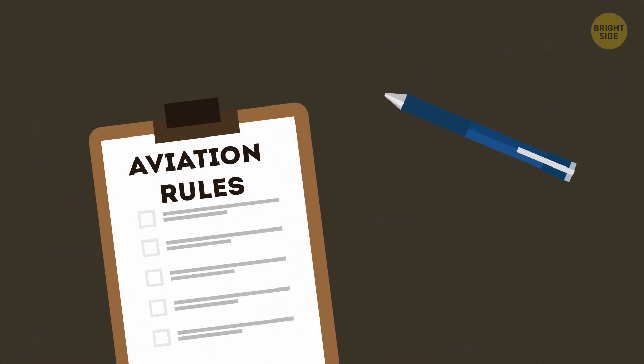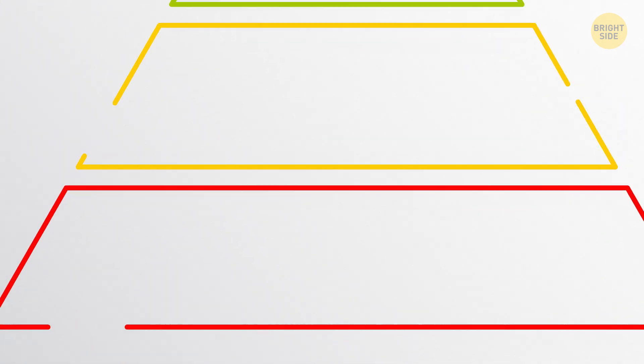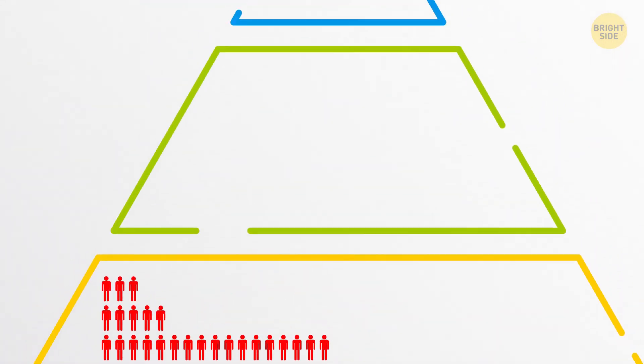But who's in charge of all the crews and thinks up all these aviation rules? The system of aviation is built like an ideal pyramid. It has billions of dollars, millions of employees, and dozens of companies in it.